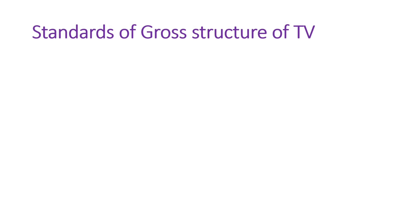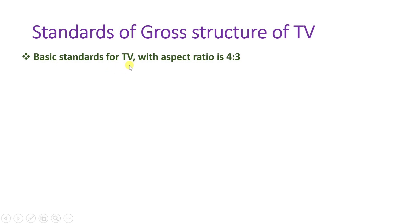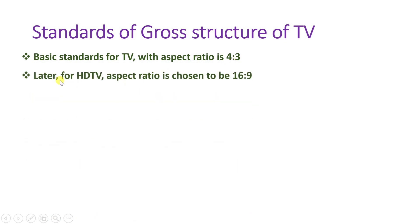Now let us see some standards for television. The basic standard for TV has an aspect ratio of 4 by 3. But as HDTV has evolved, the aspect ratio chosen is 16 by 9. So the 16 to 9 aspect ratio is used with HDTV. Let me give a few examples to make this clearer.